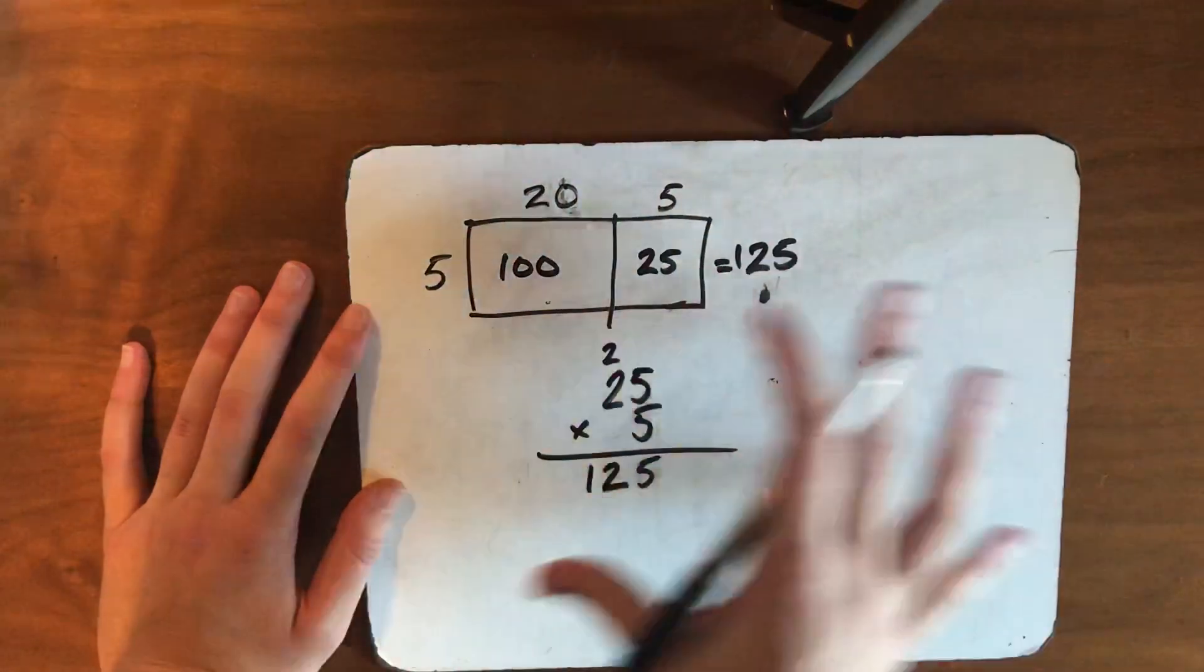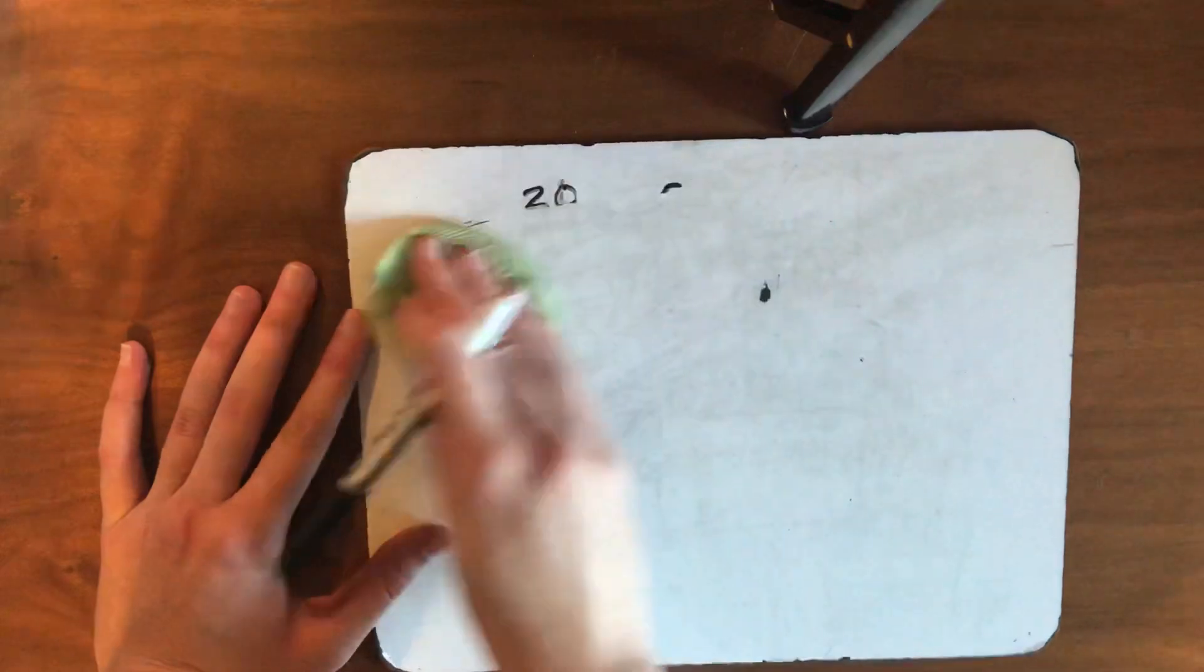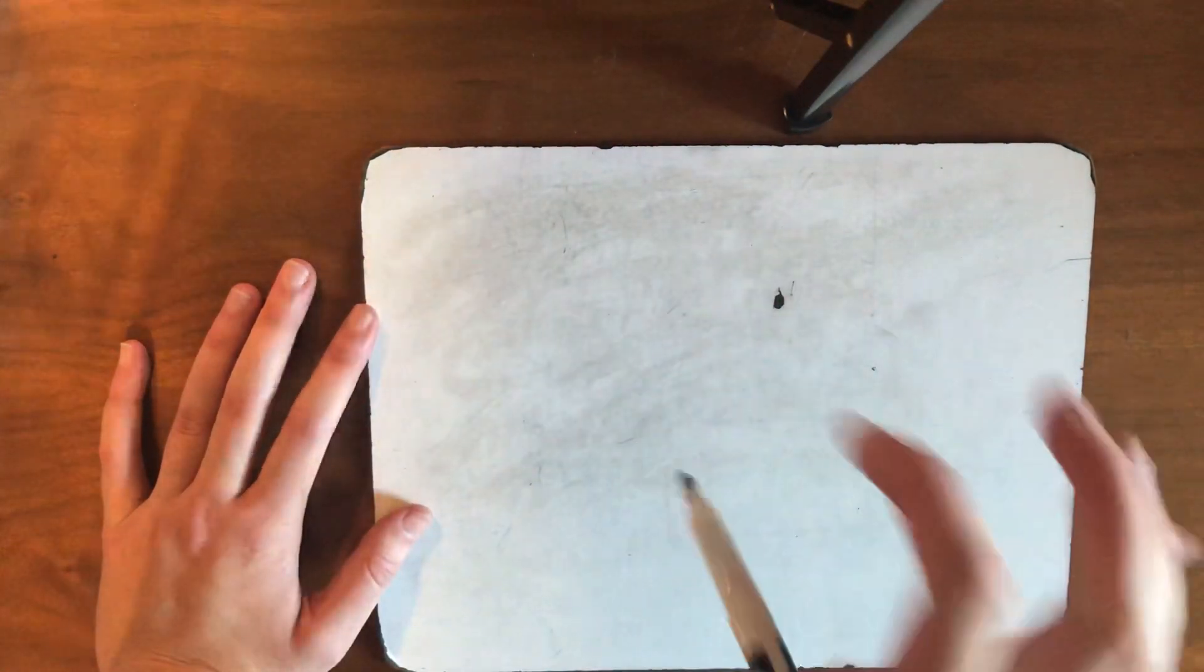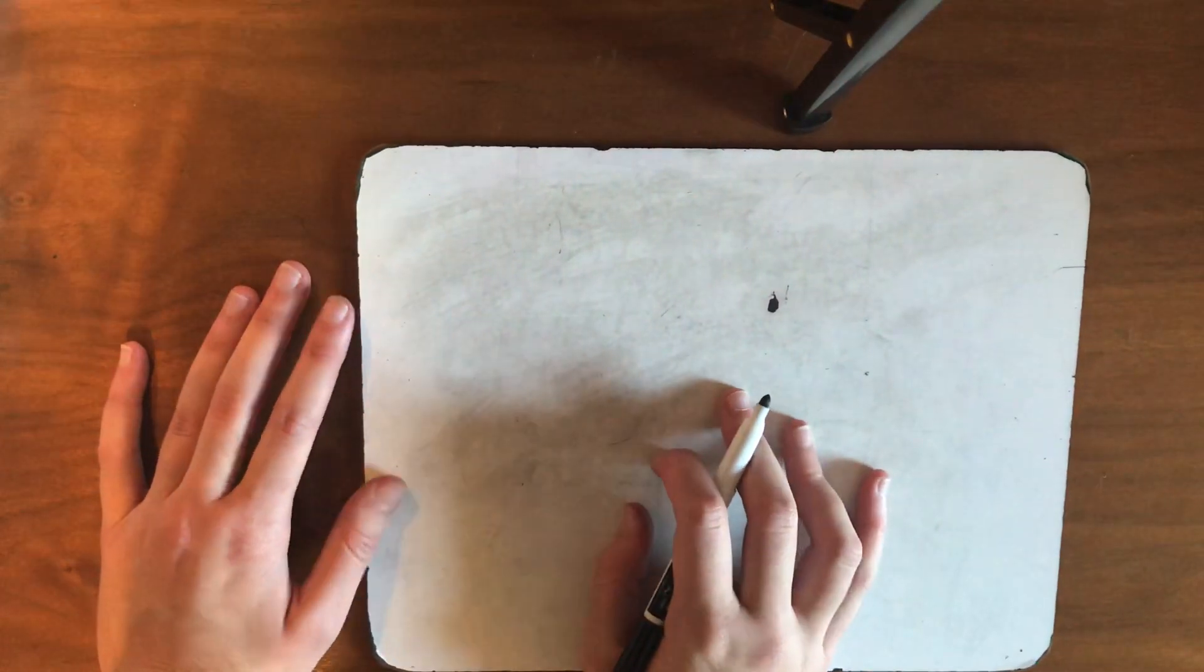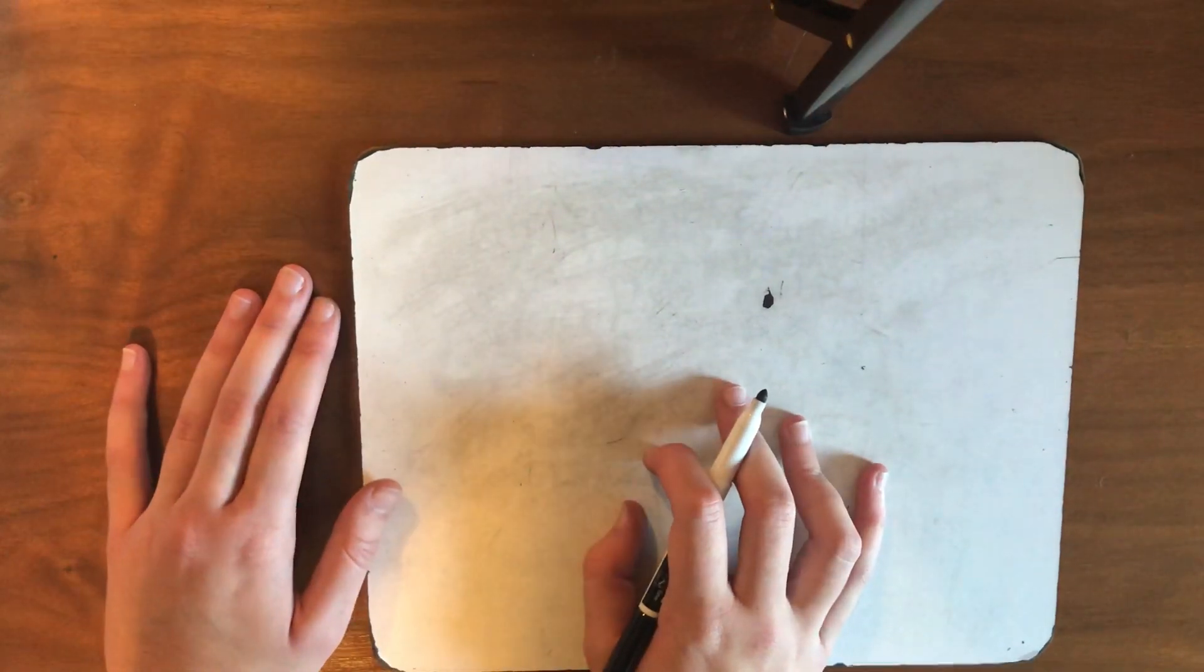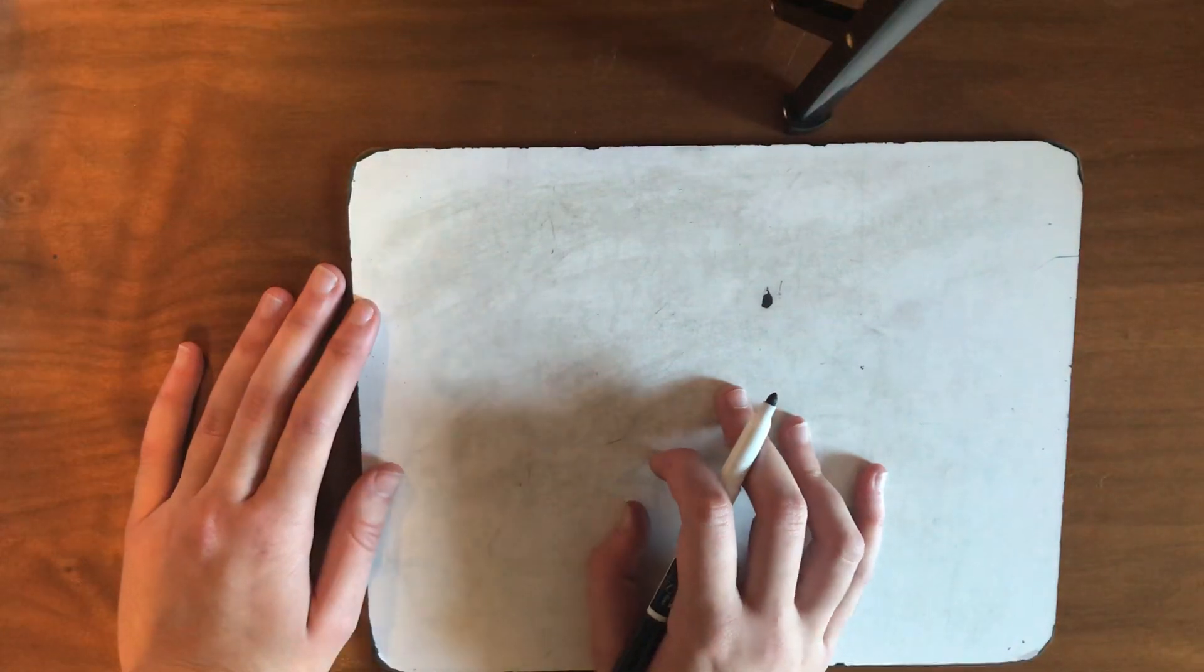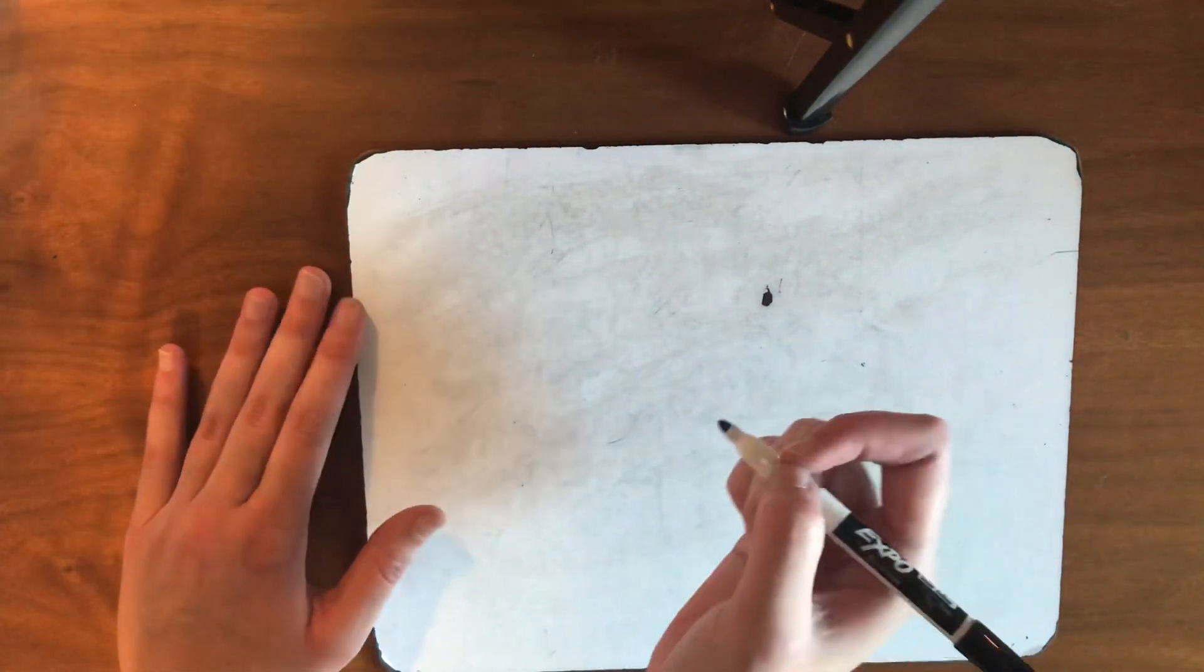Now, we're going to be using this similar format, but adding a digit. So, instead of doing 1 digit times 2, we're going to go to 1 digit times 3. And you guys do know how to do some of this, so we're going to build on that and just kind of make those connections a little bit stronger. So, I'm going to show you one first and then I'll let you guys do a couple practice ones and then I'll let you be done. So, let's try this one.